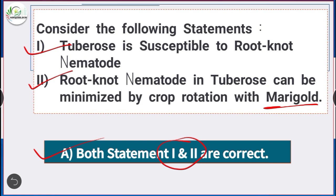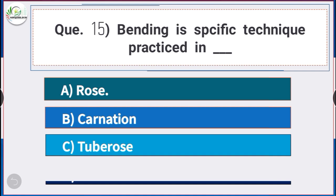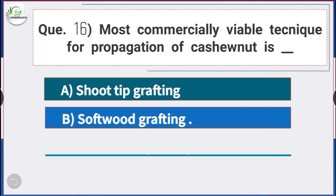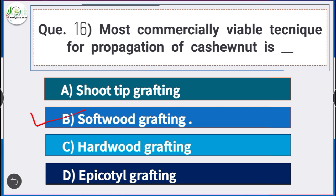Question number 15: Bending is a specific practice practiced in — answer option E — rose. Question number 16: The most commercially viable technique for propagation of cashew nut is answer option B — soft wood grafting.